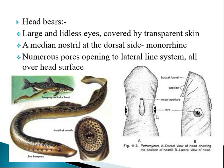A peculiarity of Petromyzon is that it has a single nostril on the dorsal side, unlike other vertebrates which have paired nostrils. This single median nostril is visible on the dorsal surface, and this condition is described as monorhine.